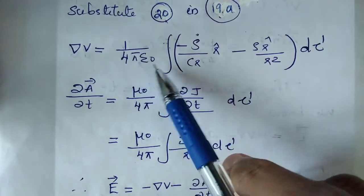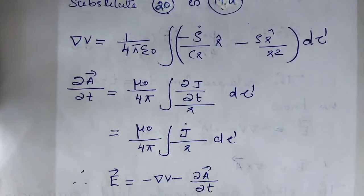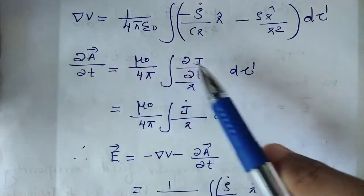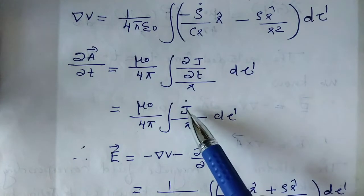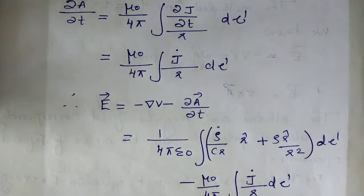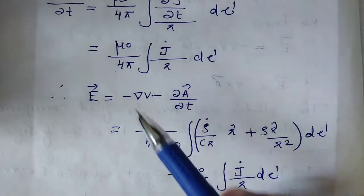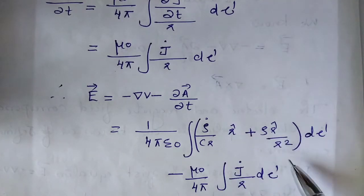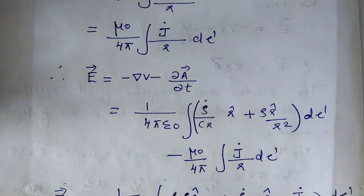Substituting into del V: del V equals 1 by 4 pi times integral of [minus (rho-dot by c r) r-hat minus rho into (r-hat by r squared)] d-tau prime. Then dou A by dou t equals mu0 by 4 pi, derivative with respect to t of integral J by r d-tau prime, which equals mu0 by 4 pi, integral of J-dot by r, d-tau prime.